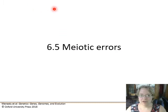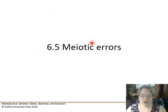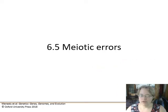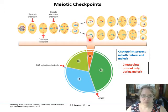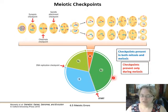Like every process in biology, meiosis is messy and can have errors. These errors are mostly called non-disjunction — something is not coming apart when it should. To lower the chance of this happening, there are a bunch of checkpoints, some occurring in both mitosis and meiosis, and some occurring only during meiosis.